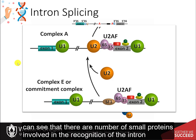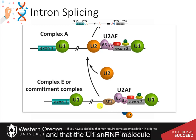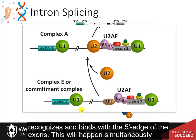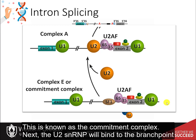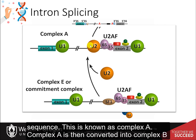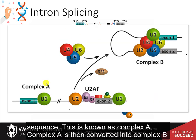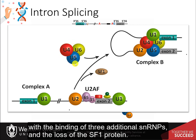In the first step, a number of small proteins are involved in the recognition of the intron, and the U1 small nuclear RNP molecule recognizes and binds with the five prime edge of the exons. This happens simultaneously for all five prime positions of each of the exons throughout the messenger RNA sequence. This is known as the commitment complex. Next, the U2 SNRNP will bind to the branch point sequence. This is known as complex A. Complex A is then converted into complex B with the binding of three additional SNRNPs and the loss of the SF1 protein.